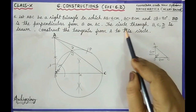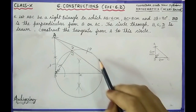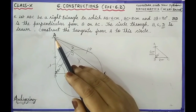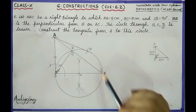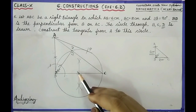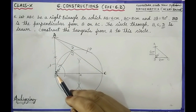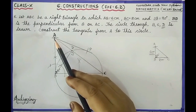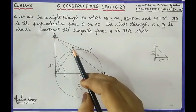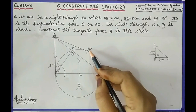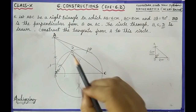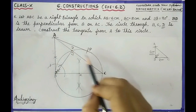Then we constructed tangents from A. AB is already a tangent because AB is perpendicular to radius BM. Since tangents from an external point are equal and AB is 6 cm, from point A with 6 cm radius we drew an arc cutting the circle to get point P. We joined AP. So AB and AP are the two tangents to the circle.